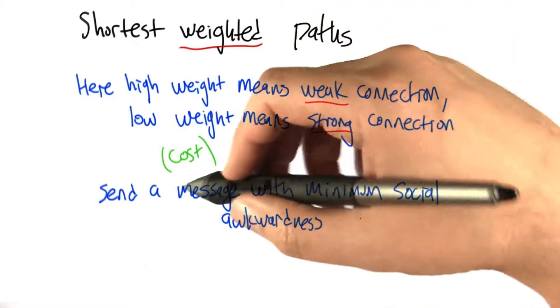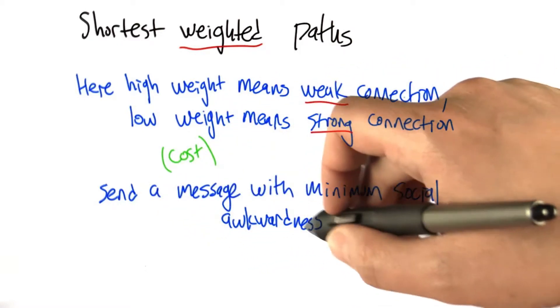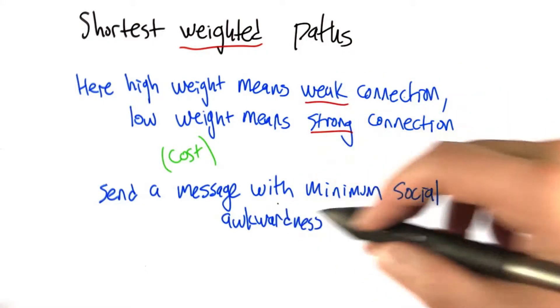An example of this sort of thing might be that we want to send a message from one person to another in a social network, minimizing, say, social awkwardness. For example,